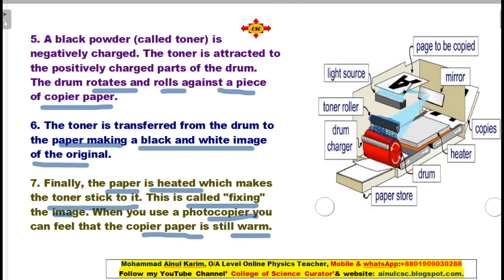In summary, the original paper is placed on a glass sheet. The light source emits light that falls on the original and is reflected from the mirror onto the positively charged drum. The negatively charged toner powder is attracted to the positive parts of the drum. When light falls on the drum it conducts electricity, and the paper is then heated by the heater to fix the toner powder onto the paper.